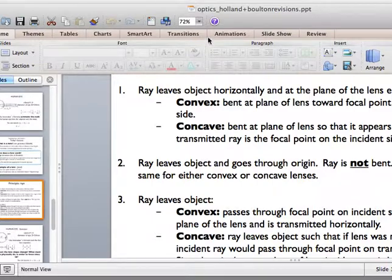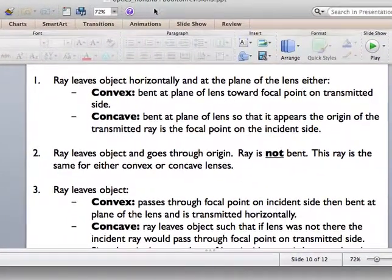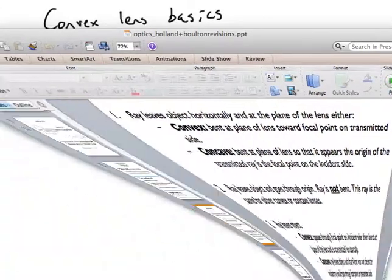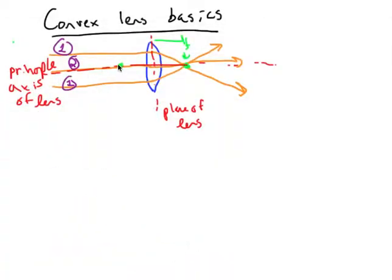The last principal ray, for a convex lens, leaves the object, passes through the focal point on the incident side, and then it's bent at the plane of the lens and transmitted horizontally. We need to find a ray that passes through the focal point on the incident side and then leaves horizontally, and it's actually this ray right here.